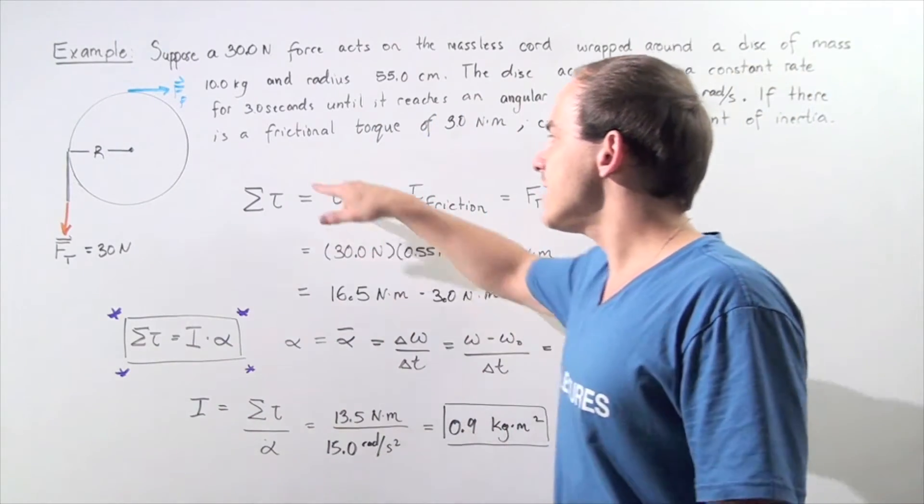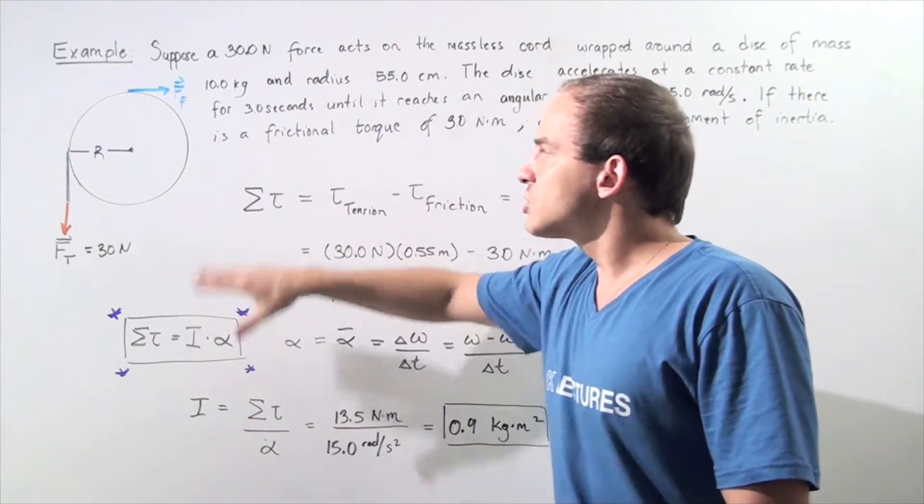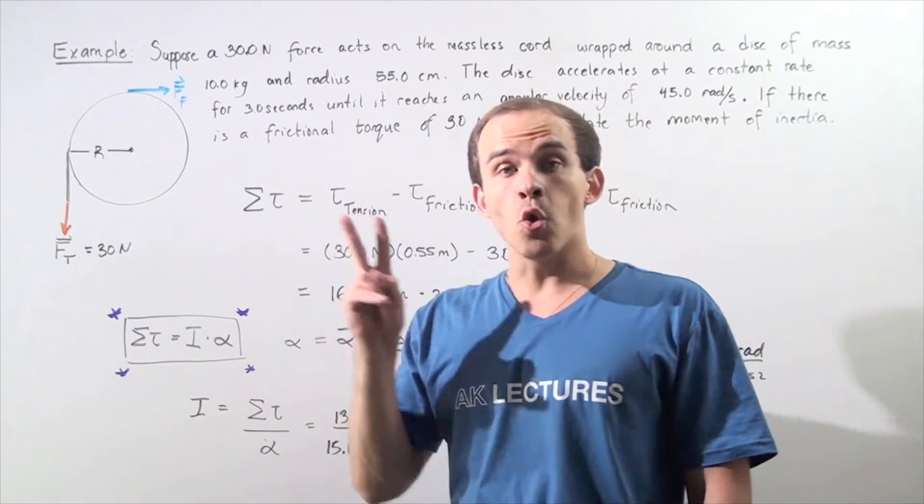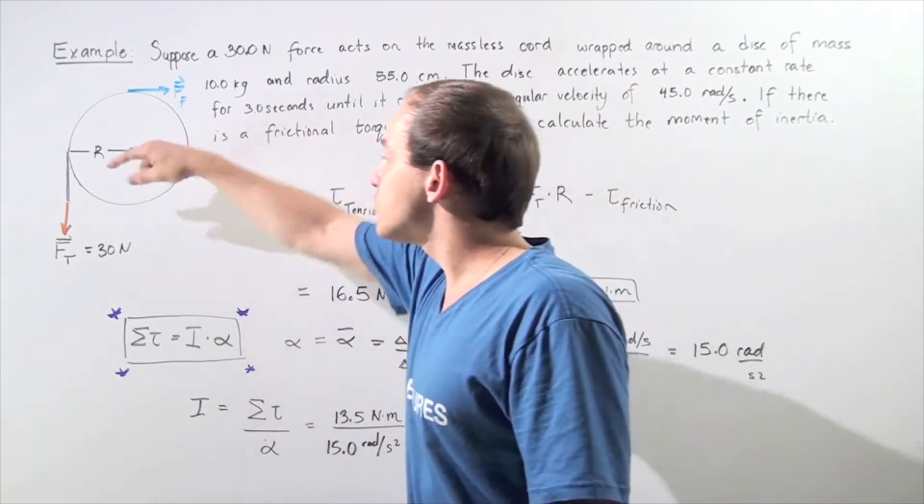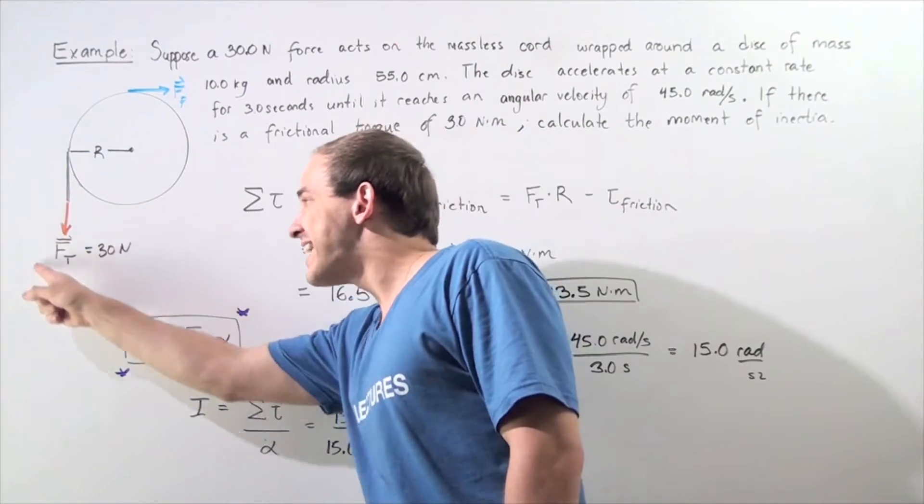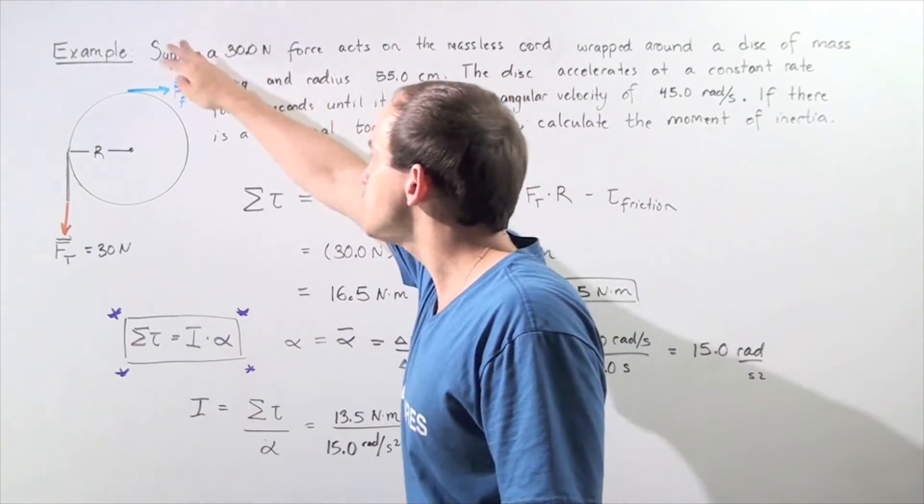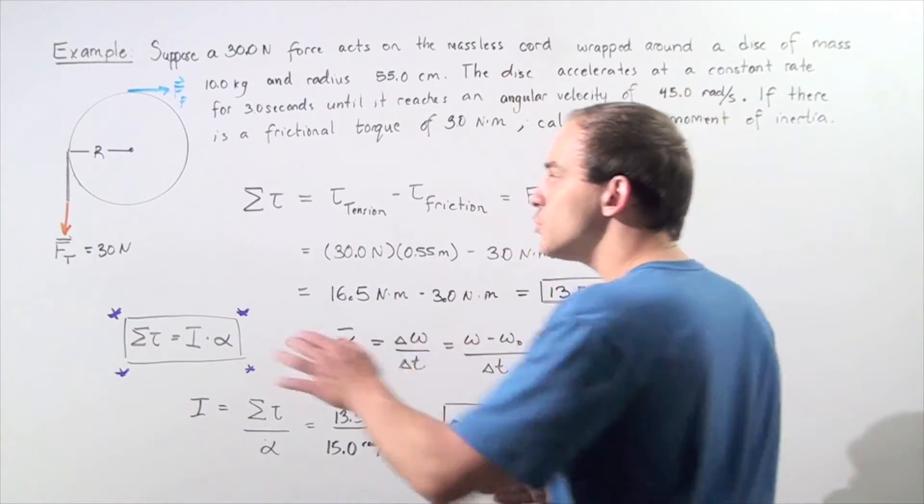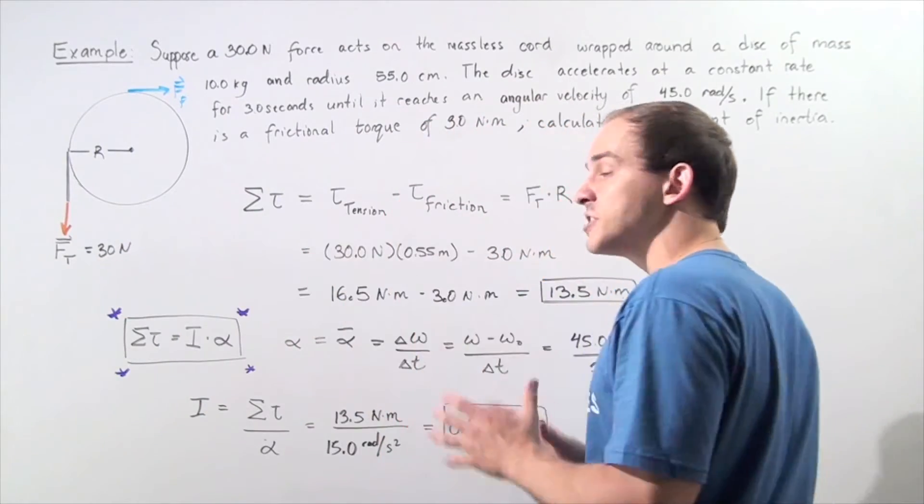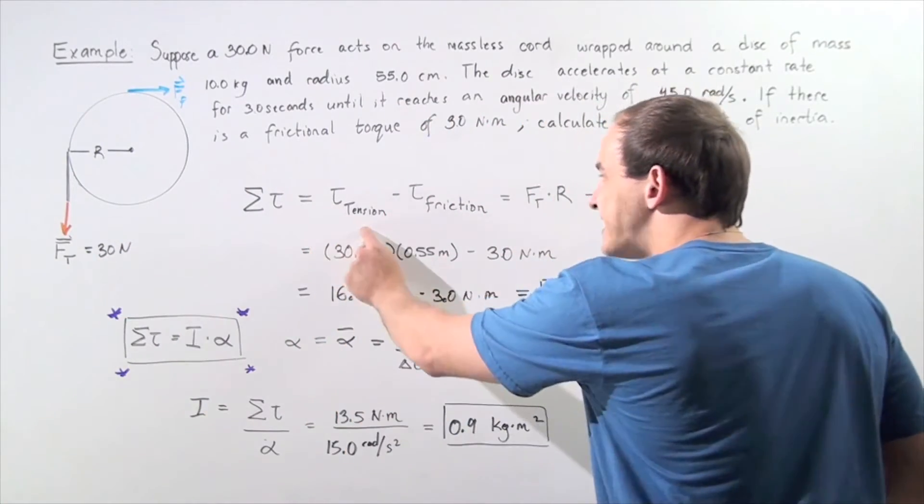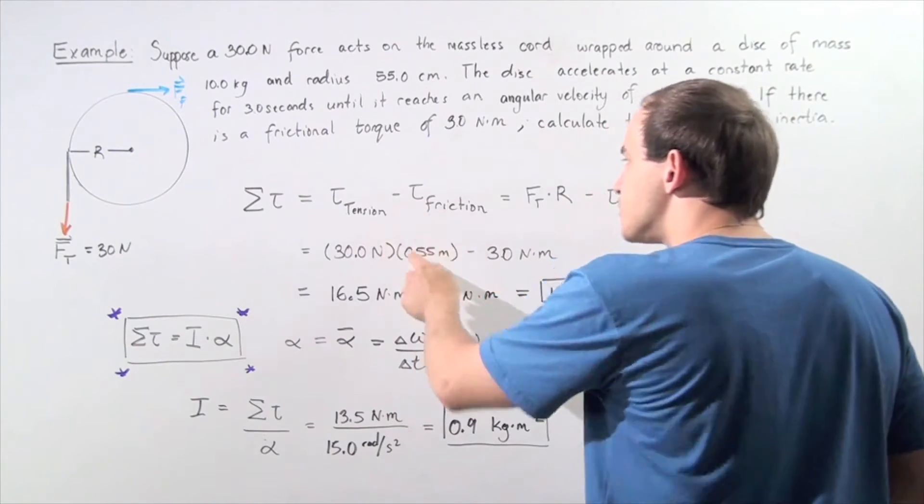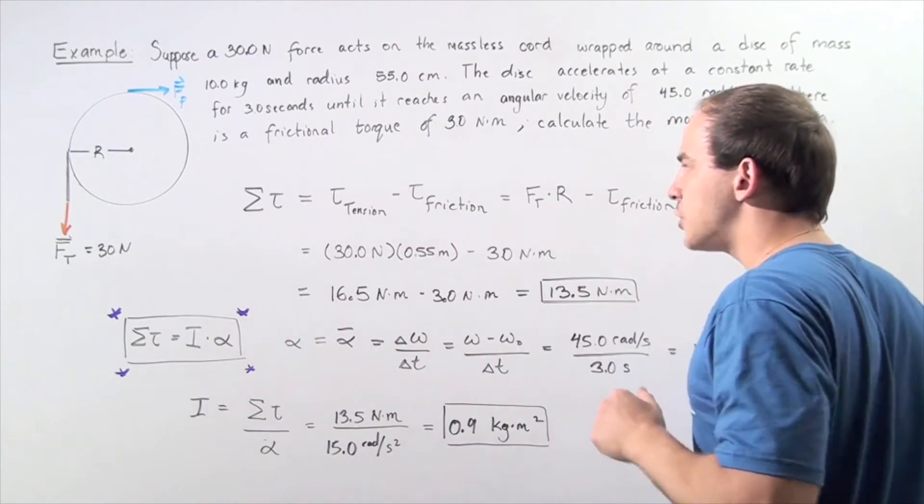Let's begin by taking the sum of the torques. In this example, we have two torques: the torque due to the tension force and the torque due to the frictional force. We choose the tension torque to be positive, so the sum is torque tension minus torque friction.